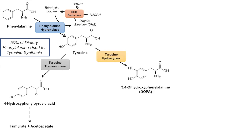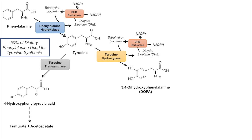Tyrosine can also be acted on by the enzyme tyrosine hydroxylase, which takes the tyrosine and hydroxylates it again — and this is when we actually have a catecholamine. This is also carried out with the help of tetrahydrobiopterin. The hydroxyl group gets transferred from tetrahydrobiopterin onto the tyrosine to form 3,4-dihydroxyphenylalanine, or DOPA. Again, the tetrahydrobiopterin becomes dihydrobiopterin, which can be recycled back to tetrahydrobiopterin by dihydrobiopterin reductase.